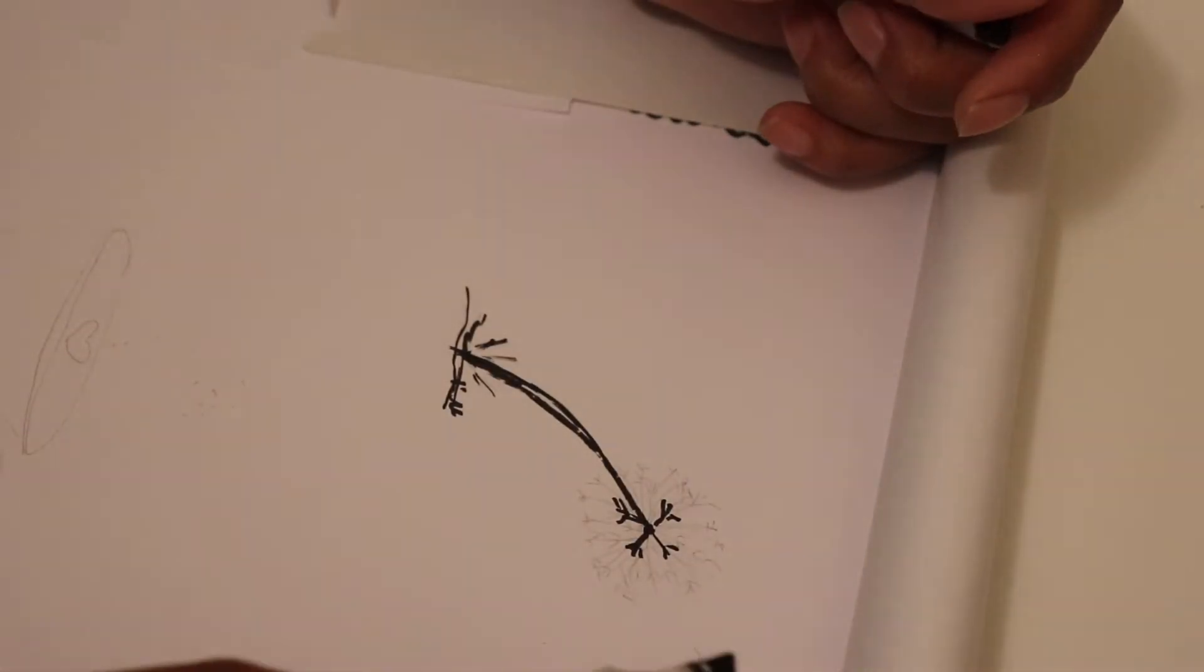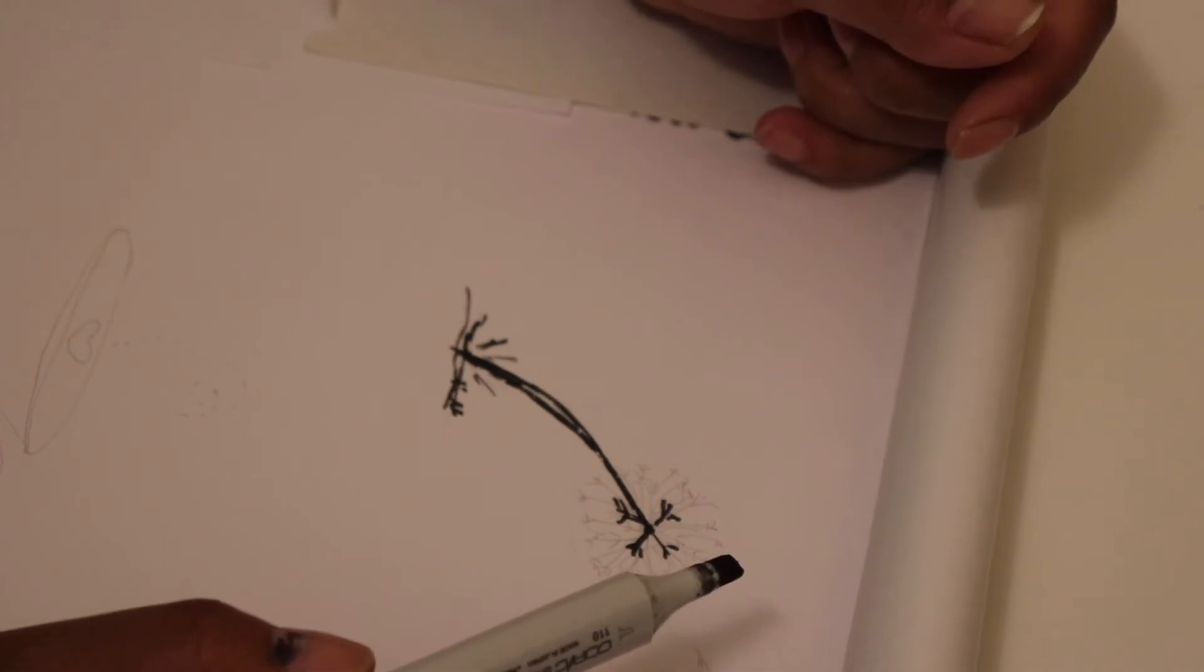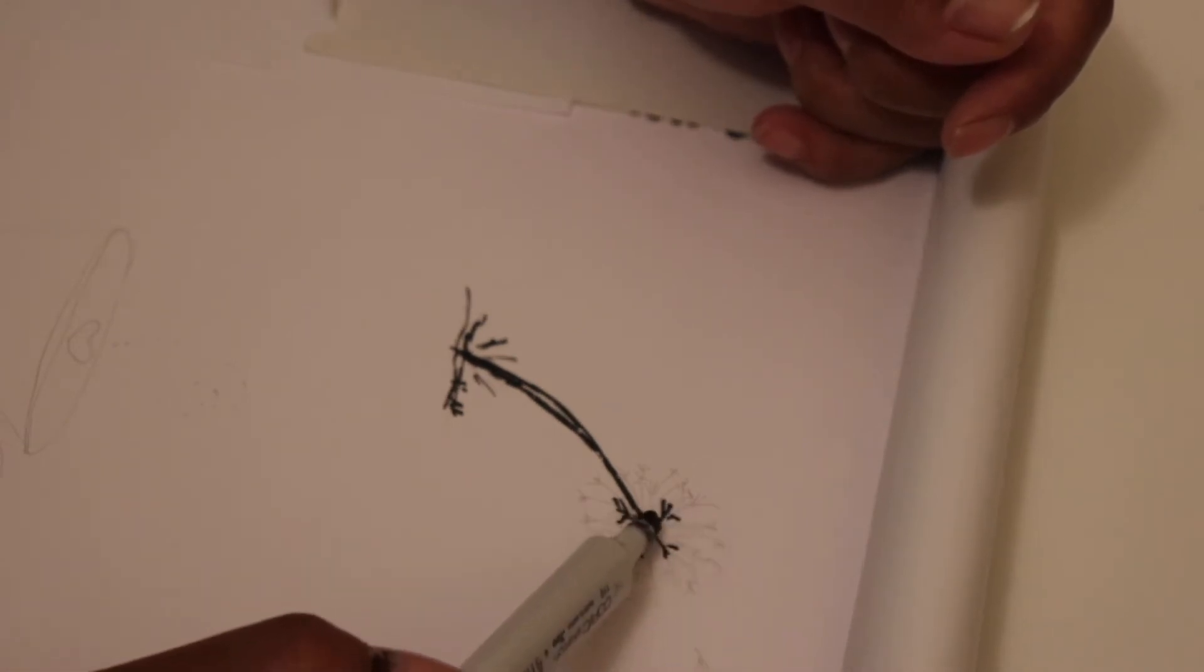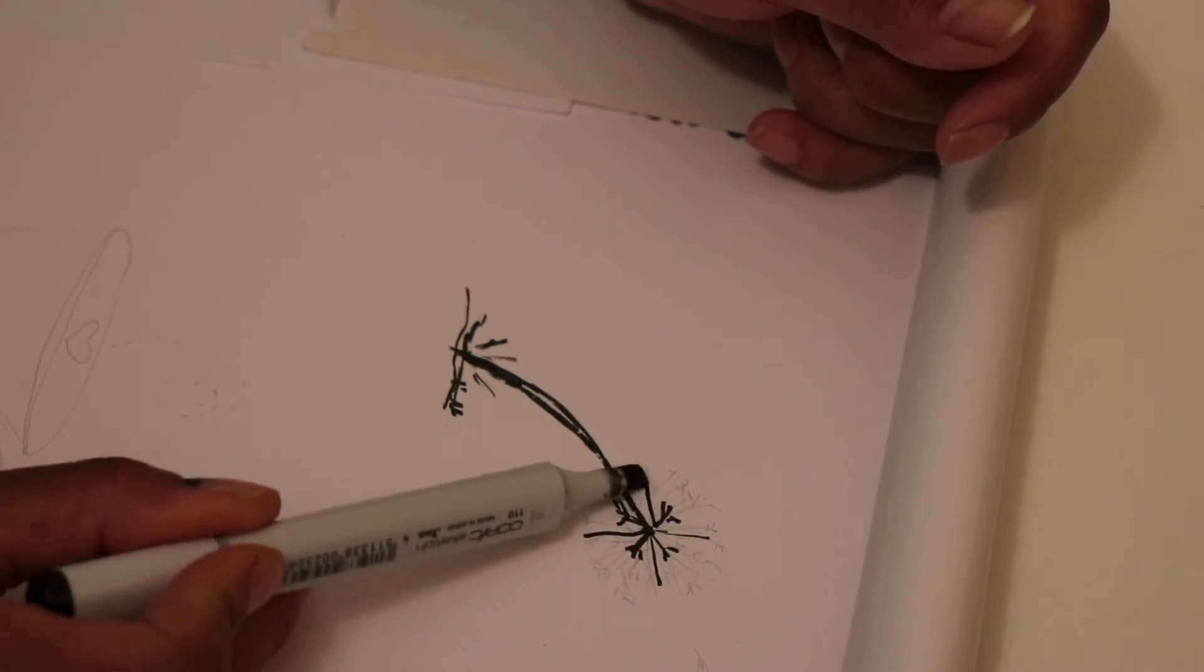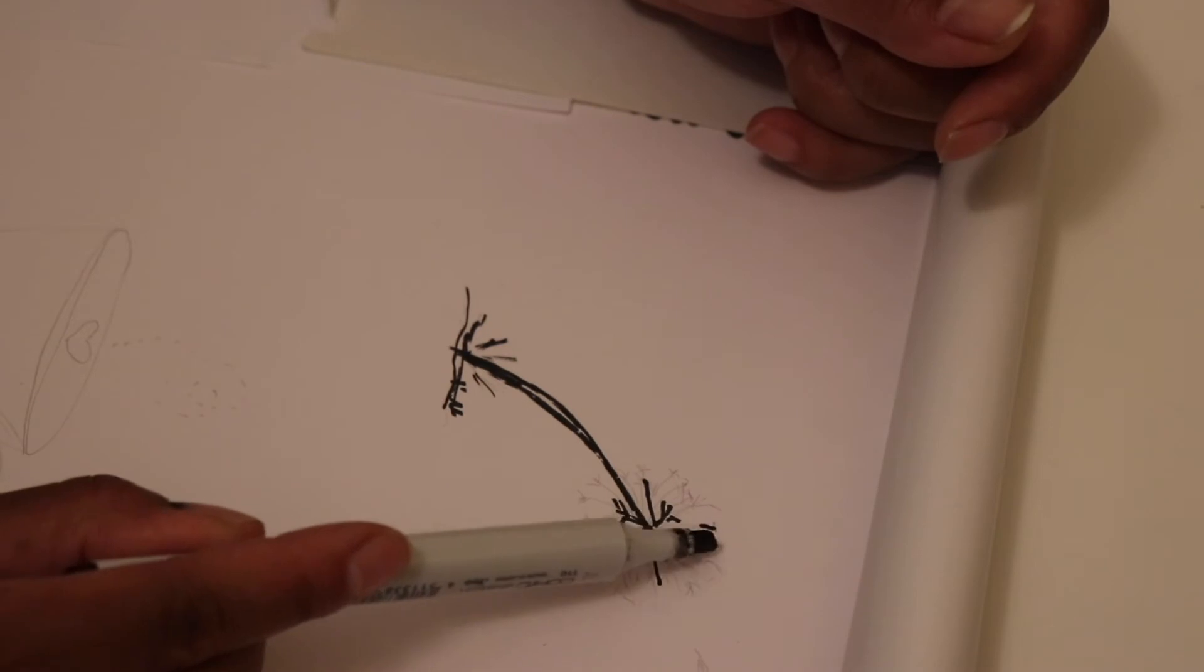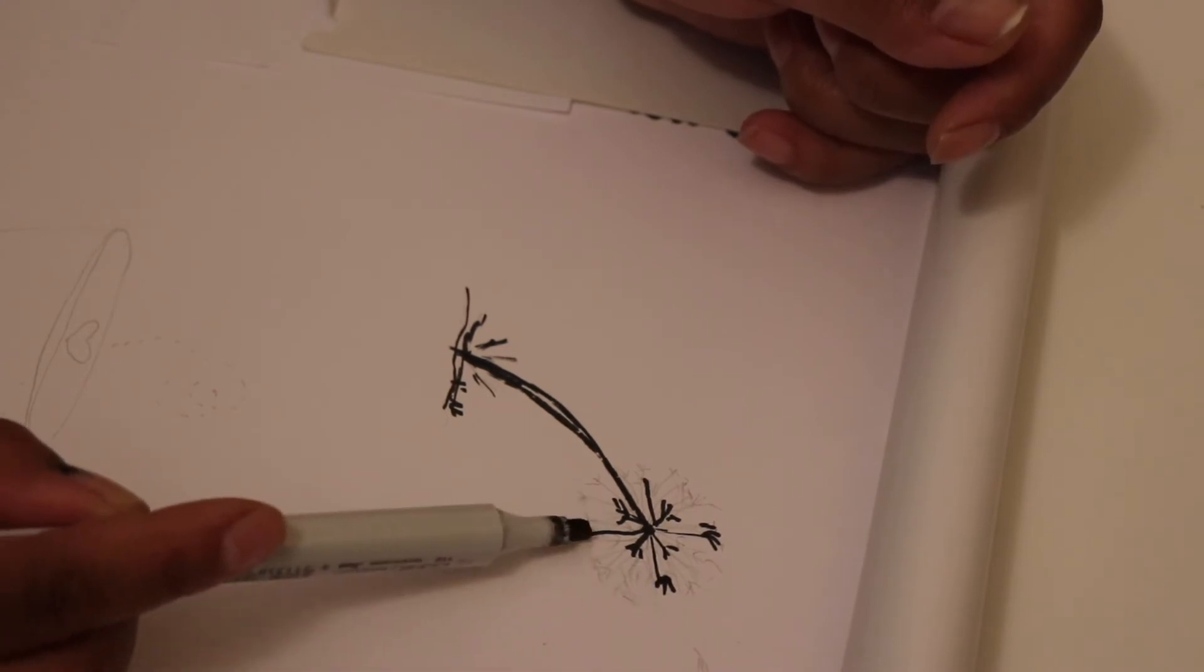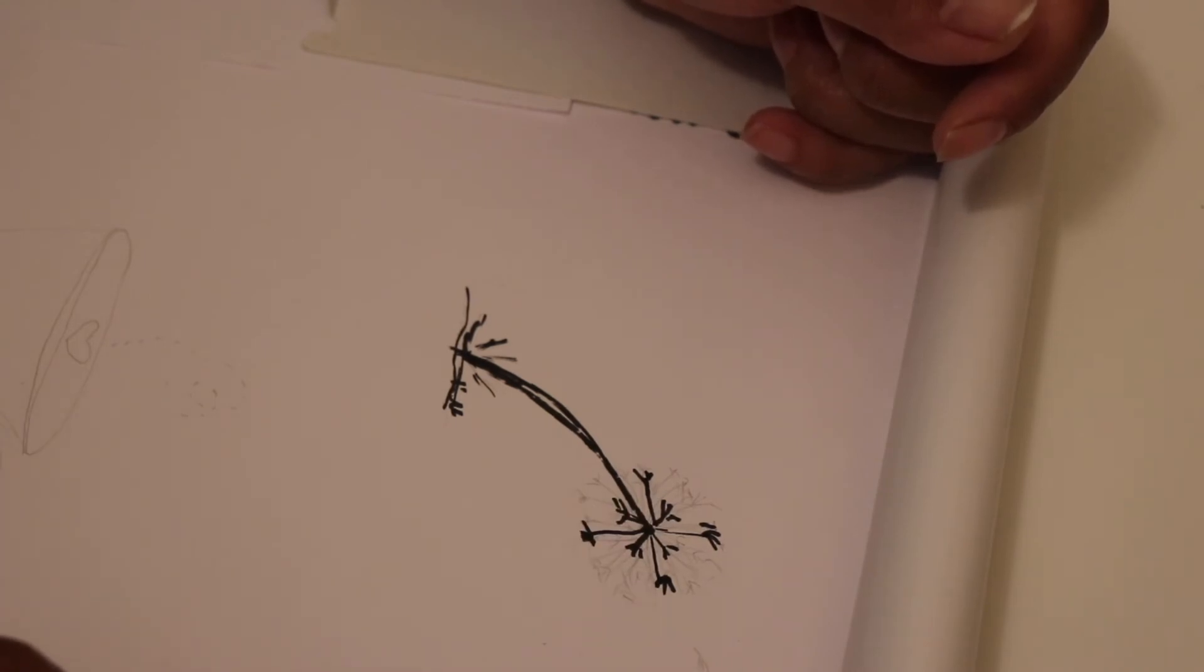And then, excuse me, on the edge of, on the other side, you want to make four bigger lines. Like this. Just like that. And make those same three marks. And that's it.